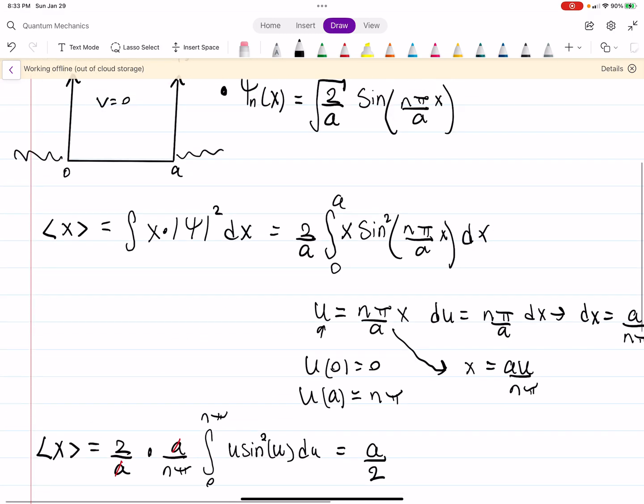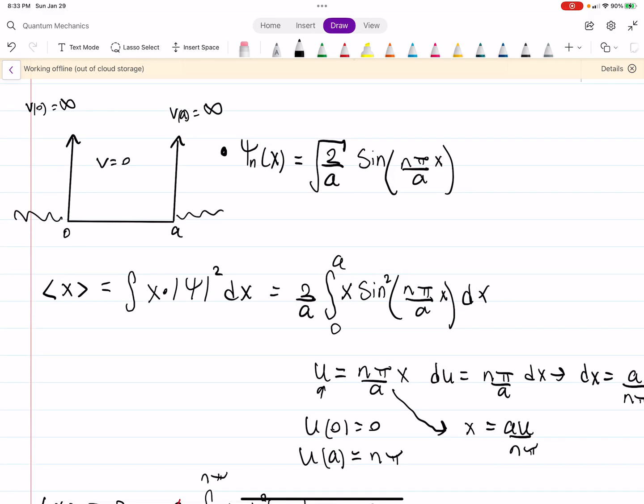a over 2 is your expectation value for x. If you want to see the integral worked out, let me know. Intuitively, though, that makes sense because it's just as equal to be on the left-hand side as it is on the right-hand side. The particle, it's not biased either way. So, it makes sense that the expectation value is a over 2. You could almost kind of guess that.